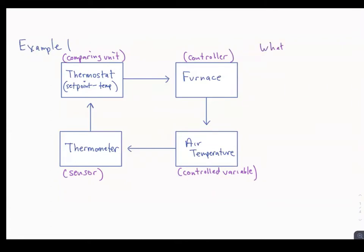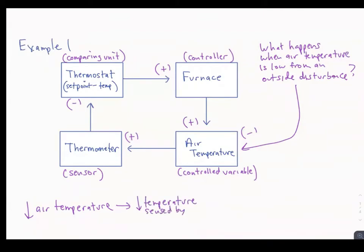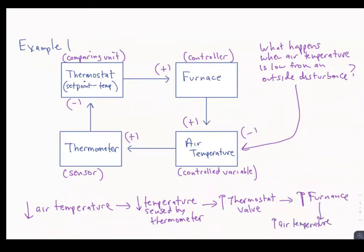What would happen when air temperature is low from some outside disturbance? If air temperature goes down, the thermometer is going to sense a decrease in temperature. That negative sign means there's going to be an increase in the thermostat's recorded deviation from the set point, and because there's a positive relationship, the furnace will get turned on. That would increase the air temperature back towards normal and help stabilize it.